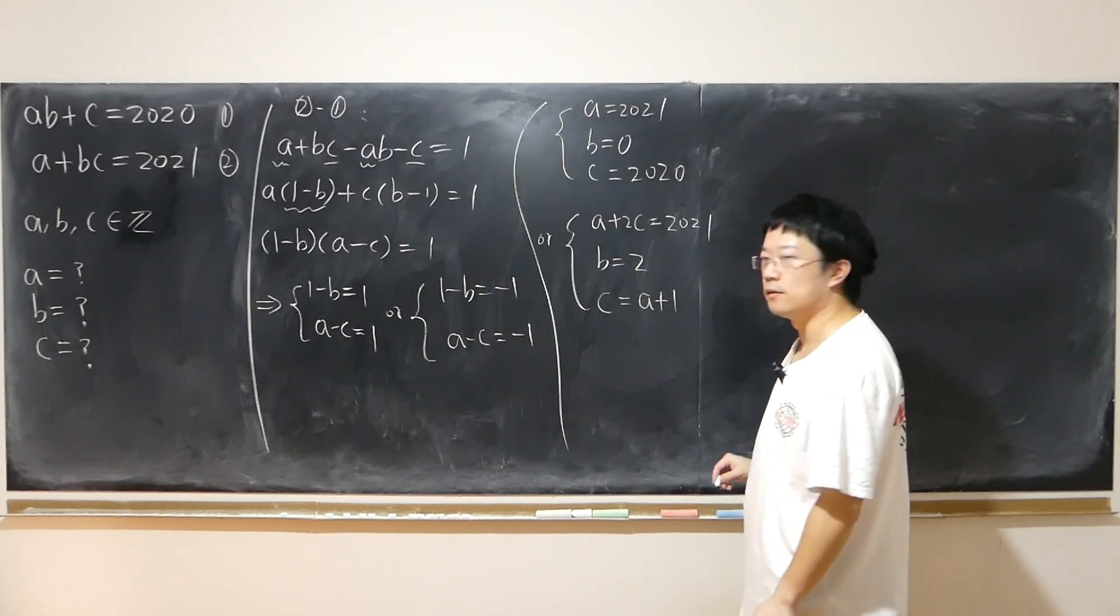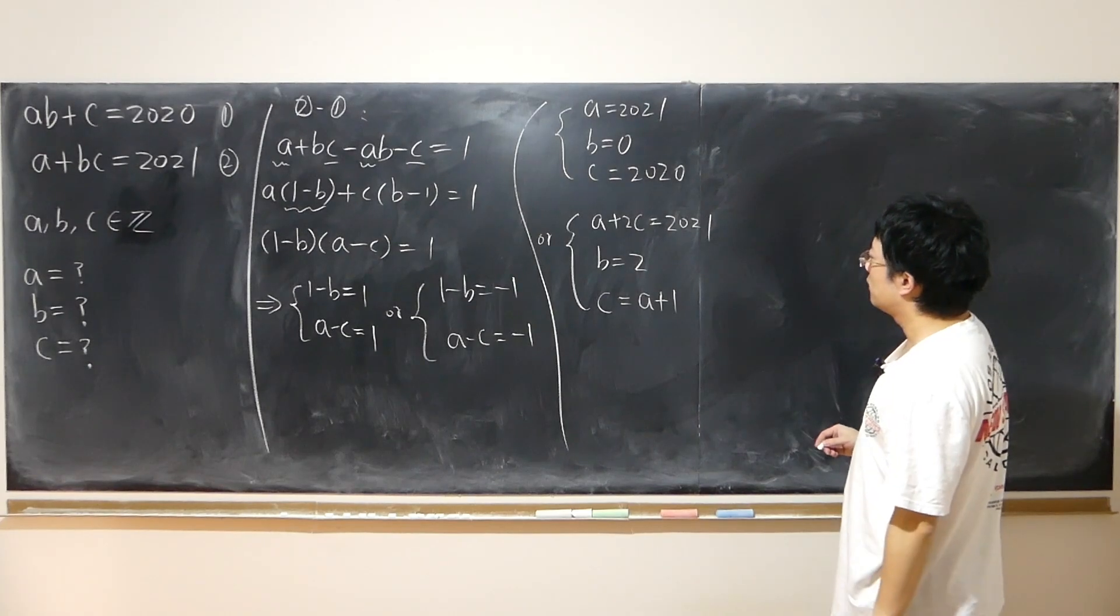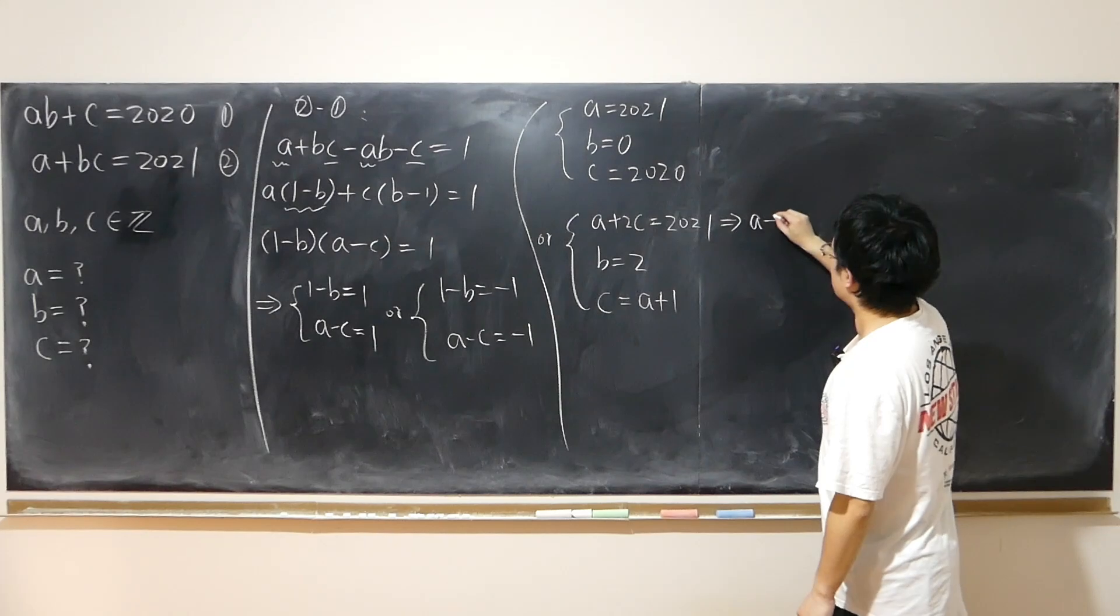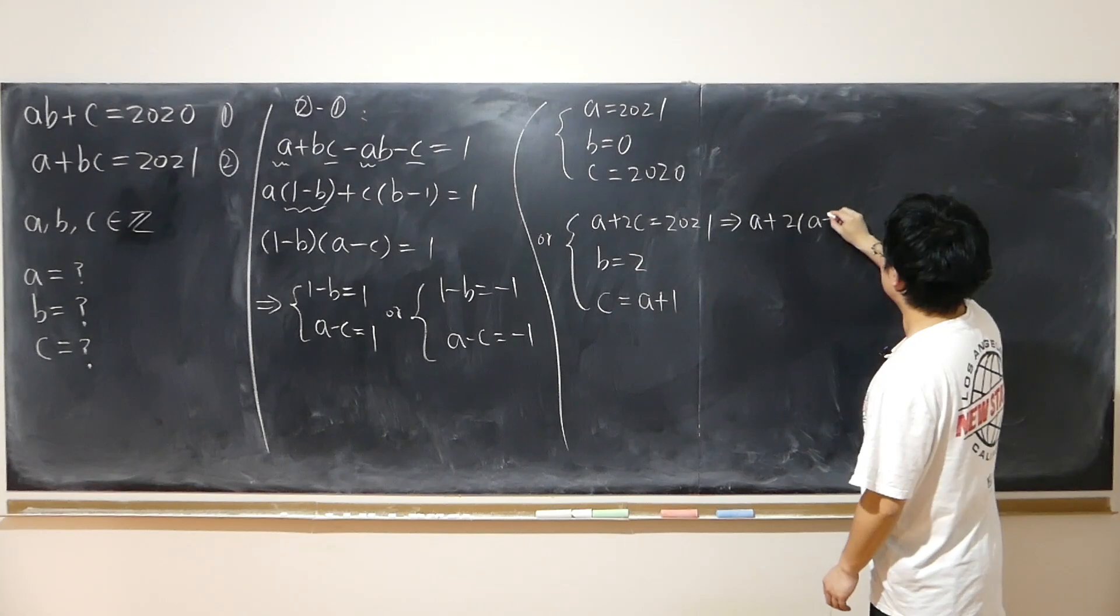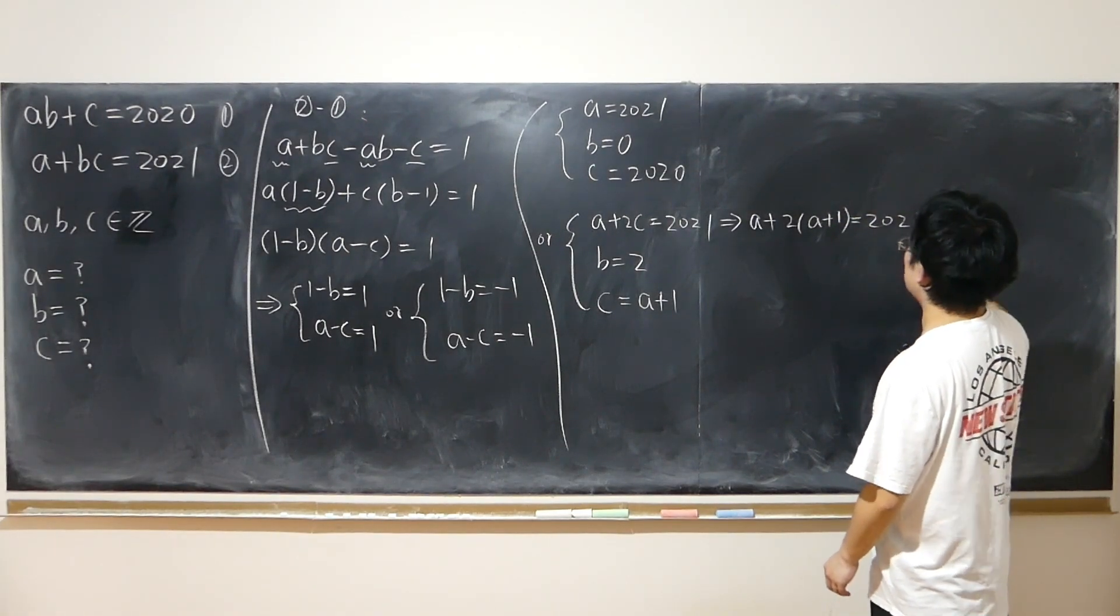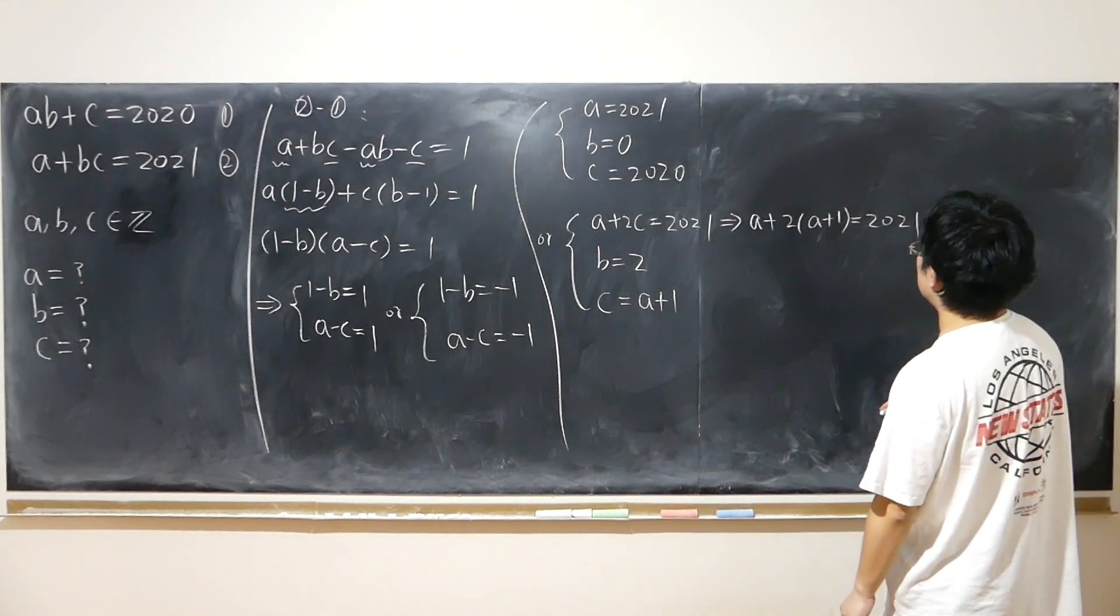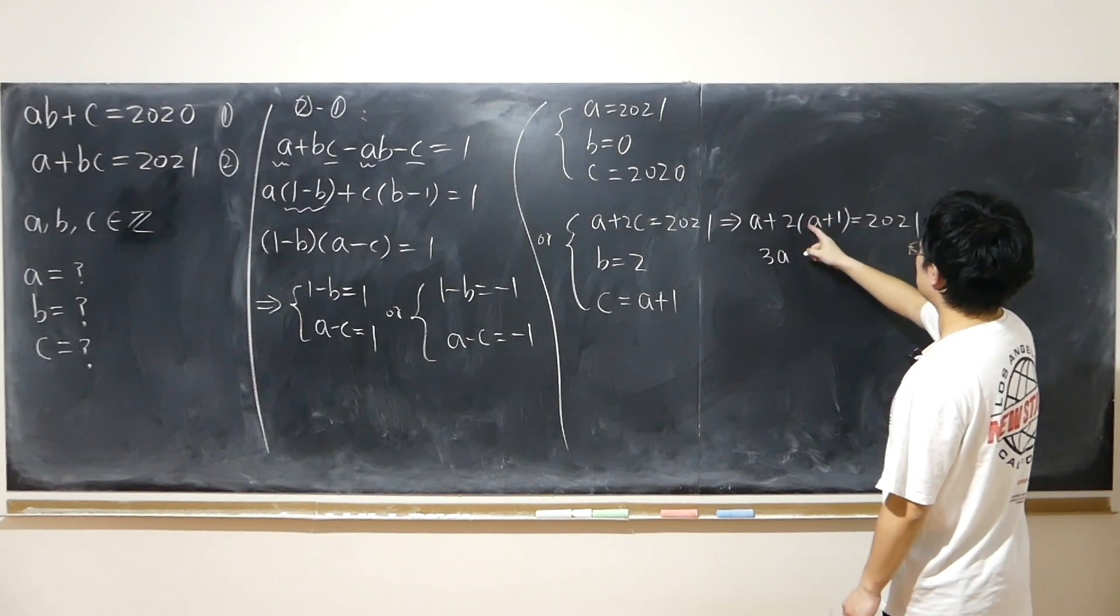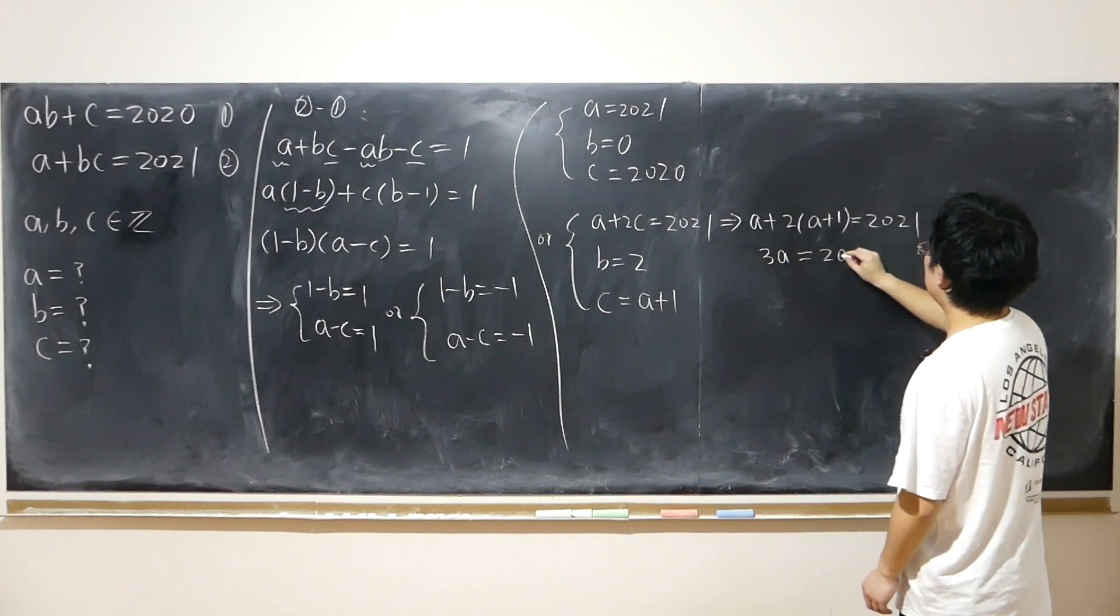That'll save me some, that'll make the calculation a little easier. So in that way, I have a plus 2 times c. And c is already a plus 1. And that's equal to 2021. So I can easily just calculate 3a plus 2. 2 to the other side. So equals 2019.